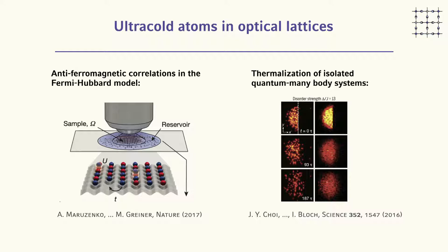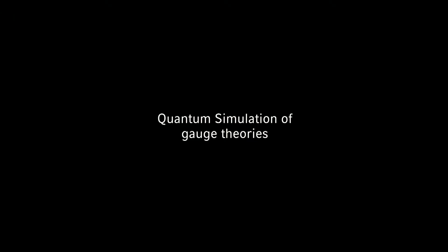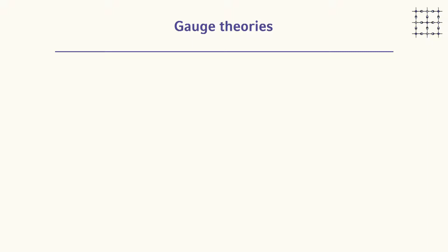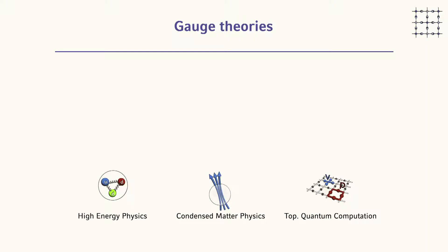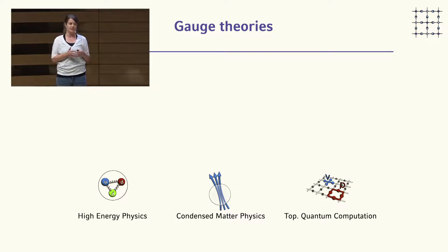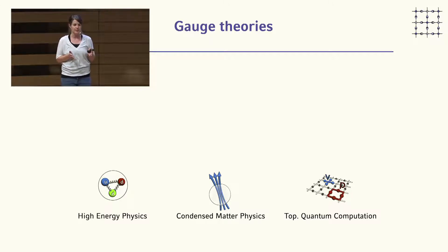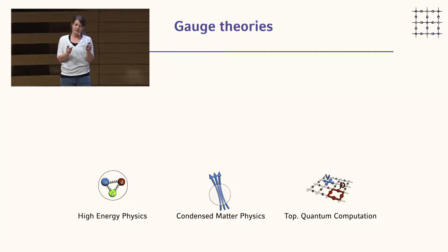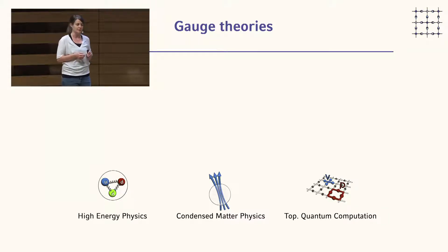The question is: can we do more? That brings us to gauge theories. Gauge theories give us the connection to a broad range of research areas because they are so fundamental — they appear in high energy physics describing fundamental particle interactions, in condensed matter physics describing effective low-energy degrees of freedom of strongly correlated electron systems, and also in topological quantum computation. The idea is to build the basic structure needed to study gauge theories in the lab.